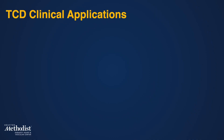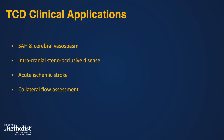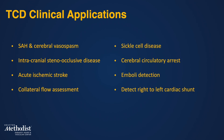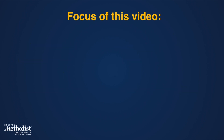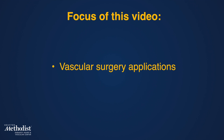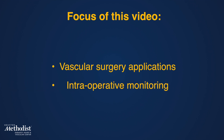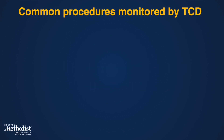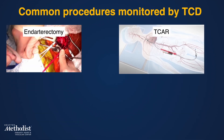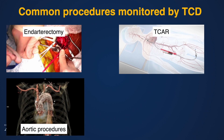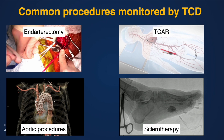The clinical applications of TCD are diverse — from the detection of cerebral vasospasm after subarachnoid hemorrhage to diagnosing a right-to-left cardiac or intrapulmonary shunt, it has broad utility. The focus of this video will be on vascular surgery applications of TCD and intraoperative neuromonitoring for cerebrovascular procedures. The most common surgical procedures where TCD assists the interventionist are carotid endarterectomy, TCAR, TAVR, TVAR, and other aortic surgeries. It also has significant utility during sclerotherapy procedures to treat peripheral AV malformations by allowing detection of a right-to-left shunt prior to delivering potentially dangerous thrombogenic material.